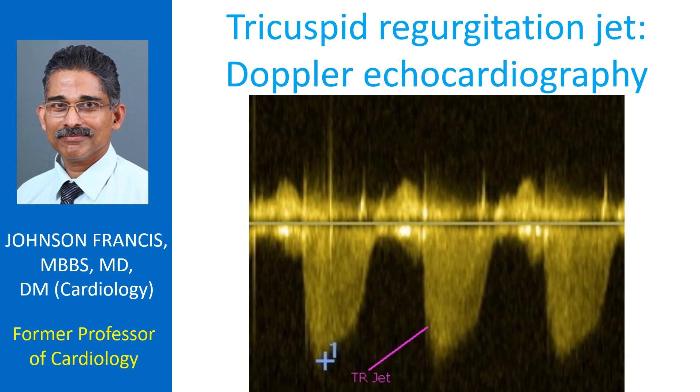Pulsed wave Doppler is not enough in most cases as the velocity range is above its aliasing limit, more so in hypertensive tricuspid regurgitation.